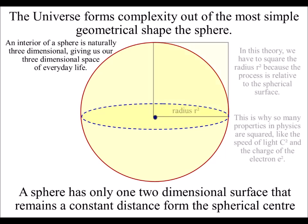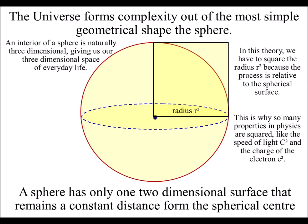In this theory, we have to square the radius because the process is relative to the spherical surface. This is why so many properties in physics are squared, like the speed of light c squared, and the charge of the electron e squared.